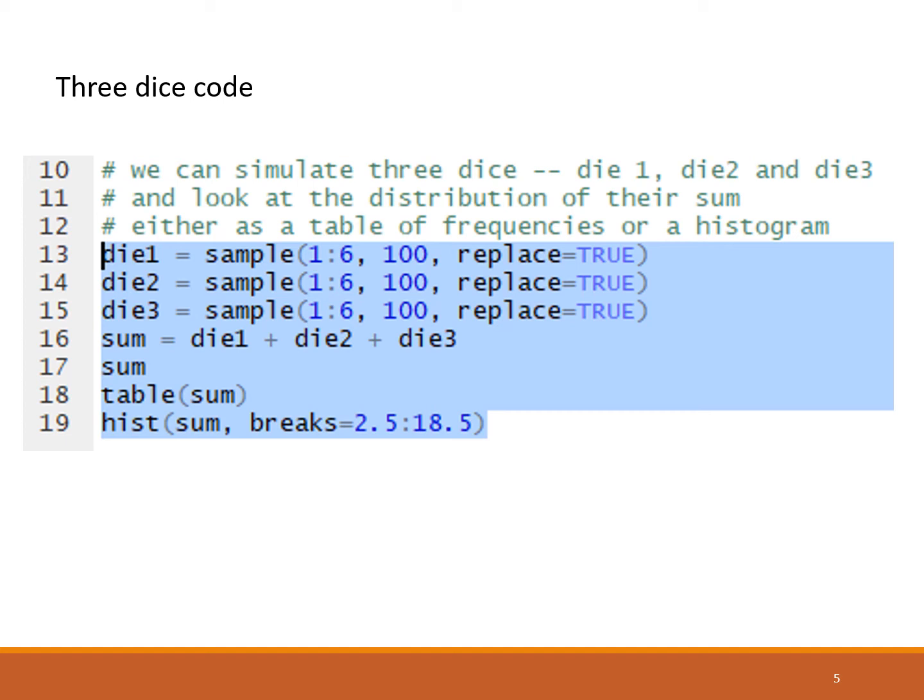Table will count our frequencies. We expect results between the lowest possible value of 3 and the highest possible value of 18. Table will give us the number of times we rolled a 3, 4, 5, and so on. We might not see the 3 like as happened before with the 2 dice, as it's a rarer thing and we're only doing 100 samples. In line 19 we're making the histogram of the sum of the 3 dice. The values range from 3 to 18, and we go a little bit below the 3 with 2.5 and above the 18 with 18.5.